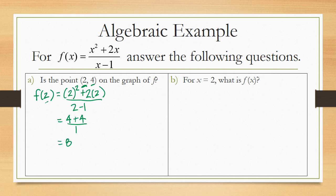So that means that when I input 2 into my function, it outputs 8, not 4. So no, 2, 4 is not on the graph.